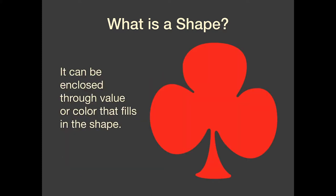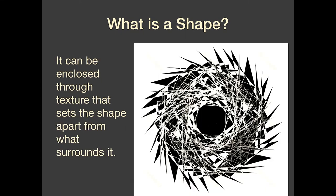Another way a shape can be enclosed is by filling it in with value or color to set it off from the background around it. It can also be enclosed by creating a texture that sets the shape off apart from what surrounds it. You see an example on the screen where the texture of this shape is different from the texture around it.